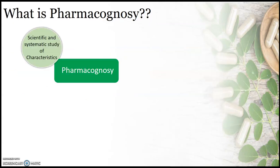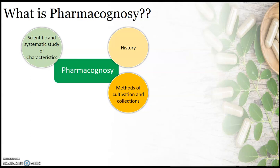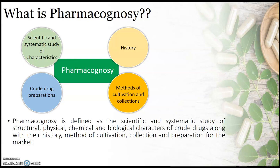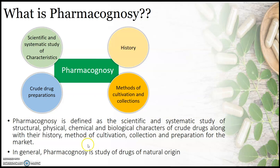What is pharmacognosy then? Pharmacognosy is the systematic and scientific study of characteristics of crude drugs, as well as the study of history of crude drugs, methods of cultivation and collection of crude drugs, and preparation of crude drugs. More formally, pharmacognosy is defined as the scientific and systematic study of the structural, physical, chemical, and biological characteristics of crude drugs along with their history, method of cultivation, collection, and preparation for the market. In layman's language, pharmacognosy is the study of drugs from natural origin.